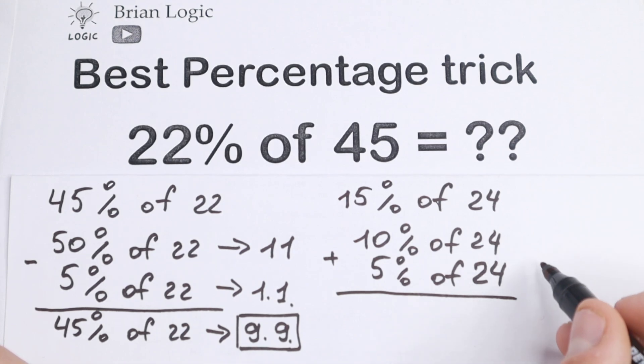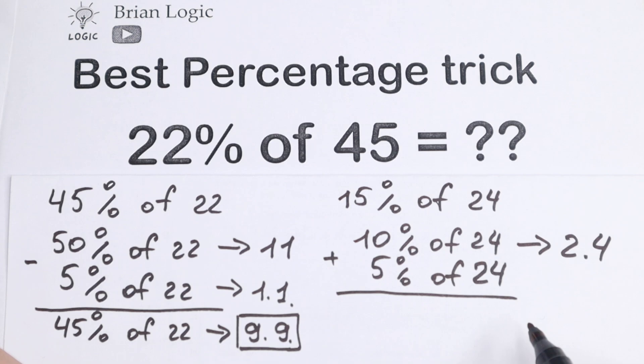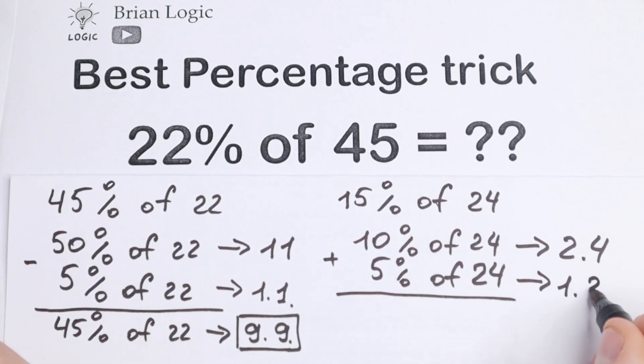10% is the tenth part of this 24. We divide it by 10, we will have 2.4. And 5%, this is the half of this 10%. So as a result, we will have 1.2. This is the half.